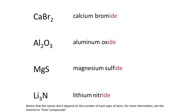For the last basic example we have lithium nitride. What you'll probably notice about these names is that the names don't depend on the number of each type of ion. This is because ionic compounds form in such a way that the overall charge is neutral — the sum of the positive charge from the cations must equal the sum of the negative charge from the anions. Because most elements only form ions with a particular charge, they combine in specific ratios.